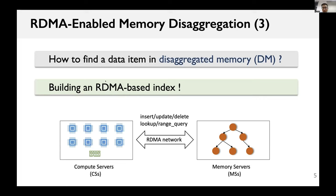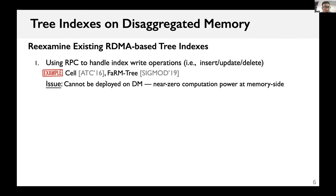When building applications such as databases, we need indexes to find data on disaggregated memory. In this work, we explore how to design a high-performance tree index on disaggregated memory, which can be concurrently accessed by multiple compute servers.